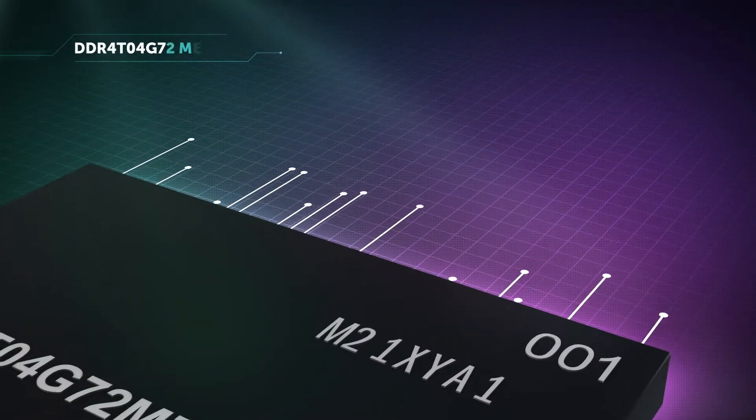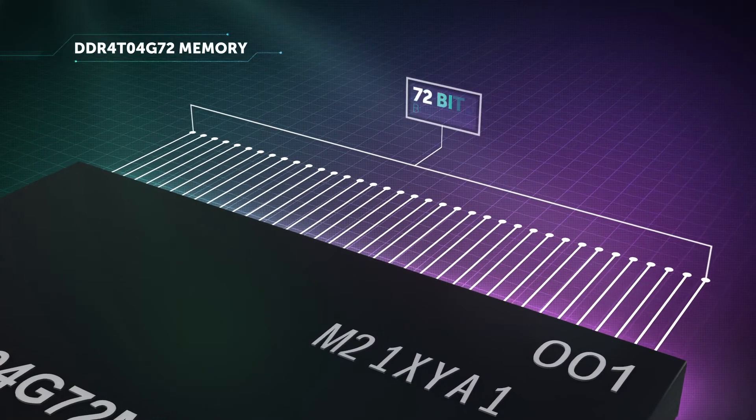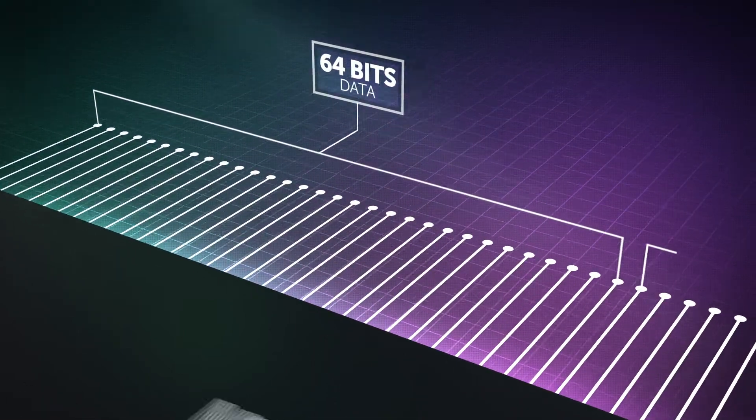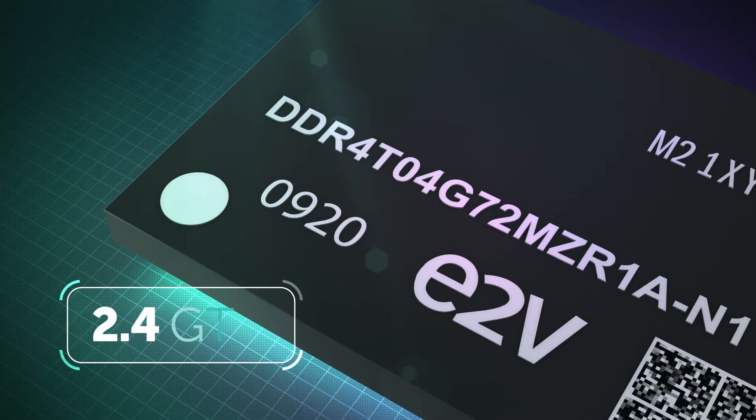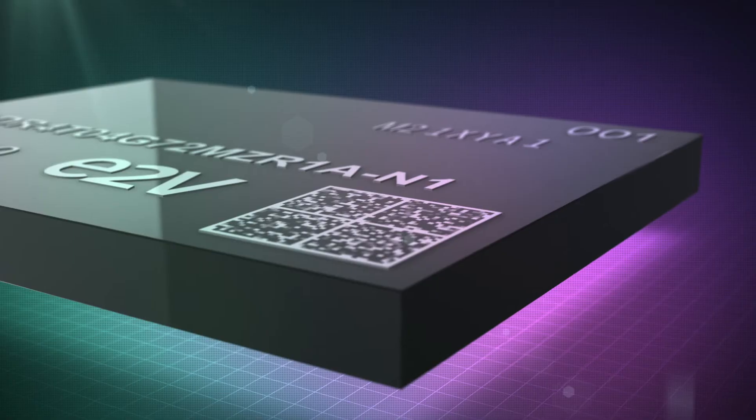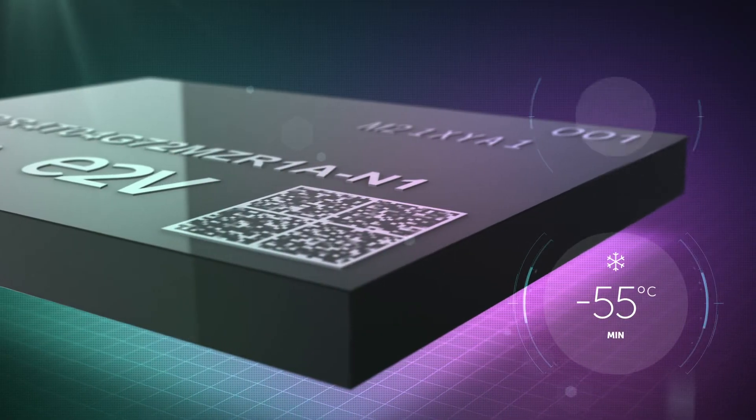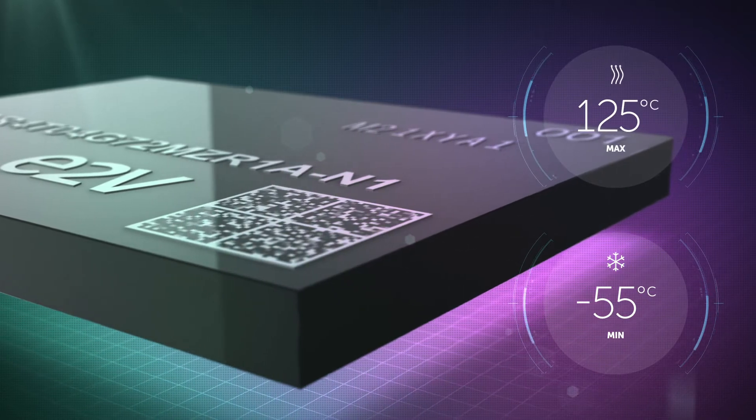Teledyne E2V's DDR4 memory features a 72-bit bus width which includes 64 bits for data and 8 bits of ECC. It operates at speeds up to 2.4 gigatransfers per second and temperatures between minus 55 and plus 125 degrees Celsius.